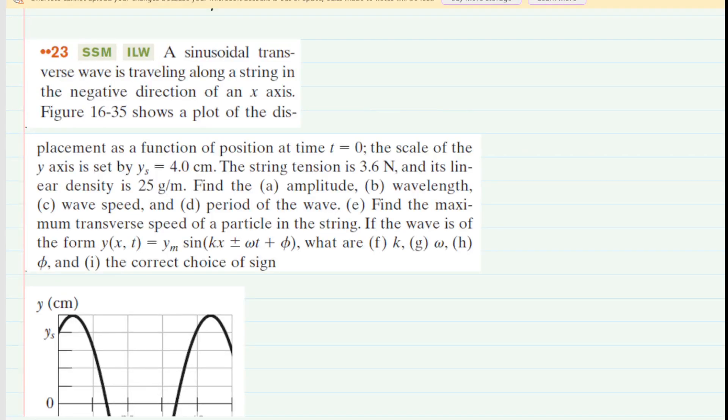Please pause the video and reread the problem before listening on. We can begin by enumerating some of the given values. For example, the string tension is given. We symbolize string tension by using tau, so tau is equal to 3.6 newtons. We also have the so-called linear density. That is symbolized by mu, so we can say that mu is equal to 25 grams per meter.